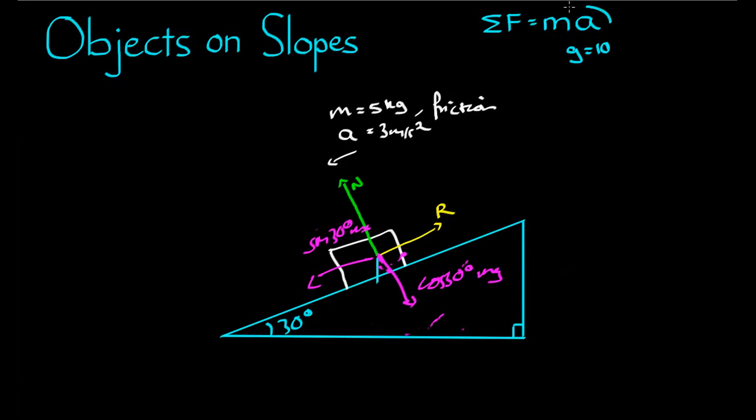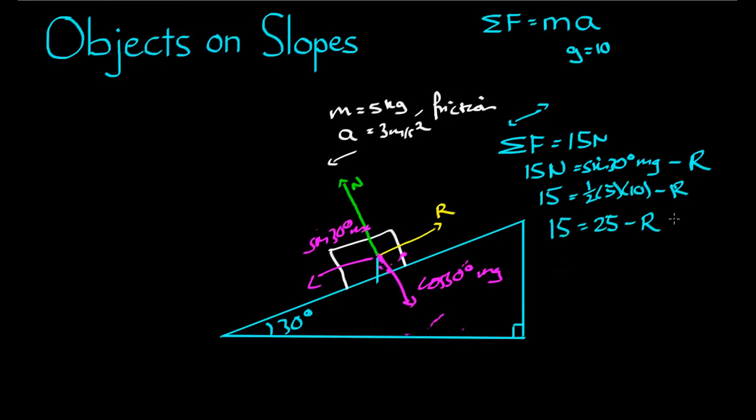We know that the net force on this box is equal to mass times acceleration. So the net force parallel to the plane is equal to 5 times 3, 15 newtons. And that 15 newtons must be made up of the force sin 30 mg acting in that direction, take away the resistive force, which is actually trying to stop that acceleration. So 15 is equal to a half, 5, 10, take R. 15 is equal to 25, take away R. R is equal to 10 newtons.